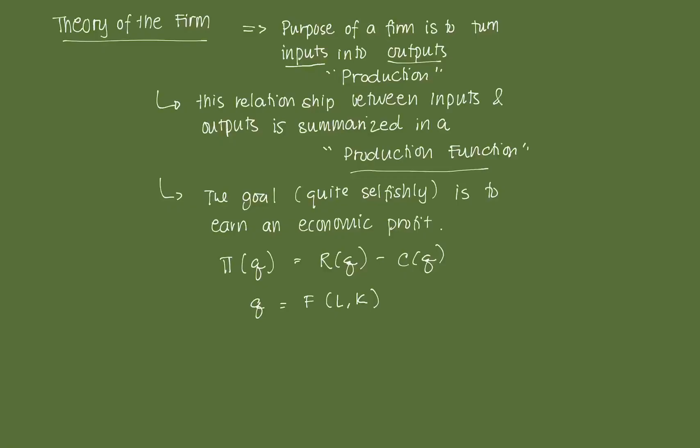In the theory of the consumer, the goal is to maximize utility by consuming as much goods as possible — good X1, X2, and so on. The goal of a firm, quite selfishly, is to maximize the profit it would garner through the production process. We denote profit with the Greek letter pi.